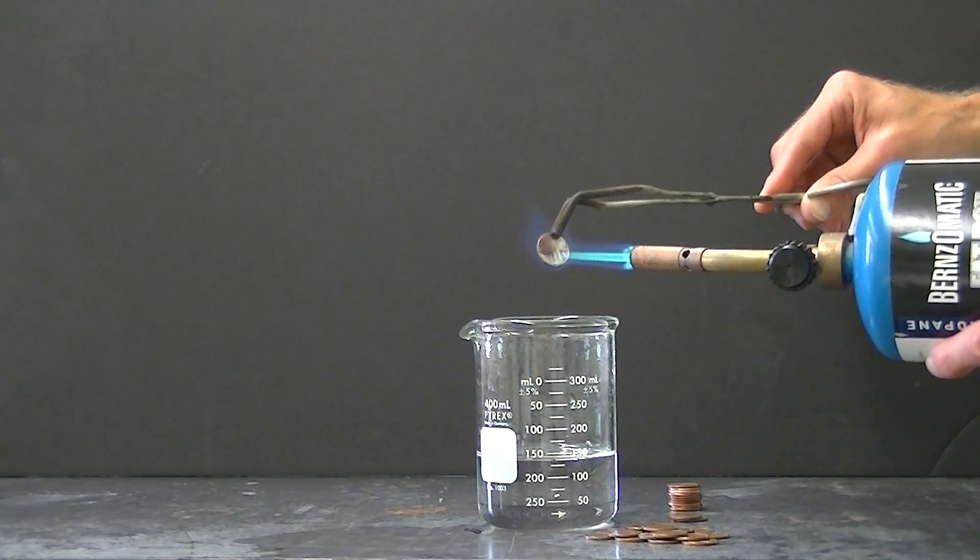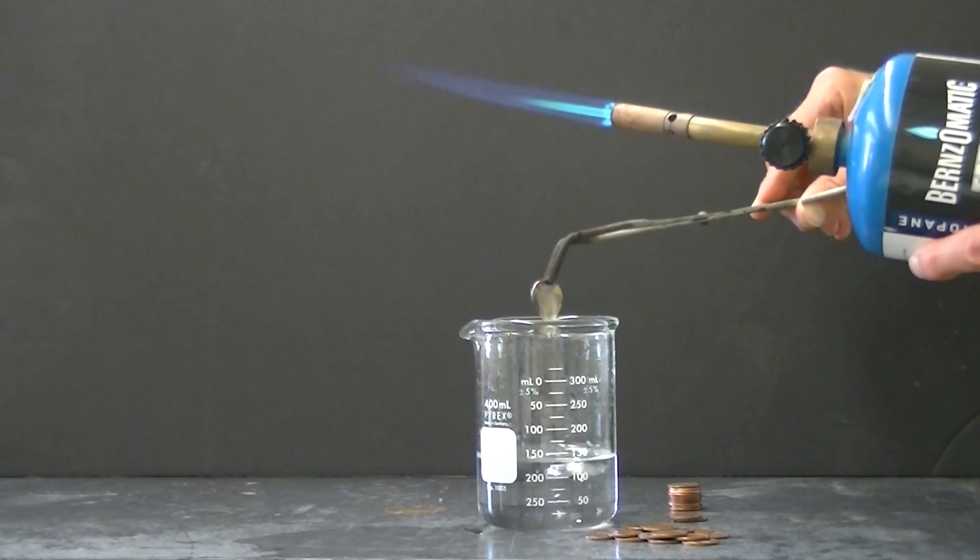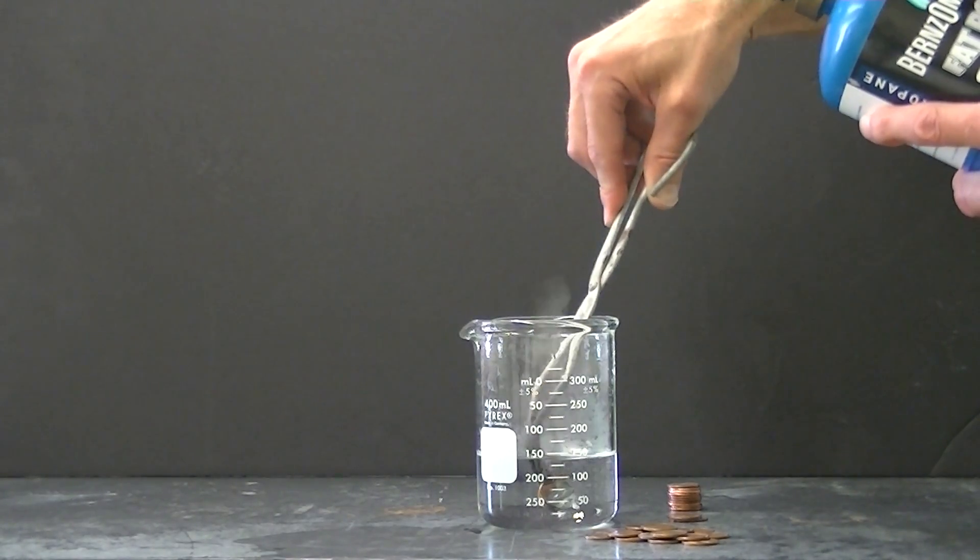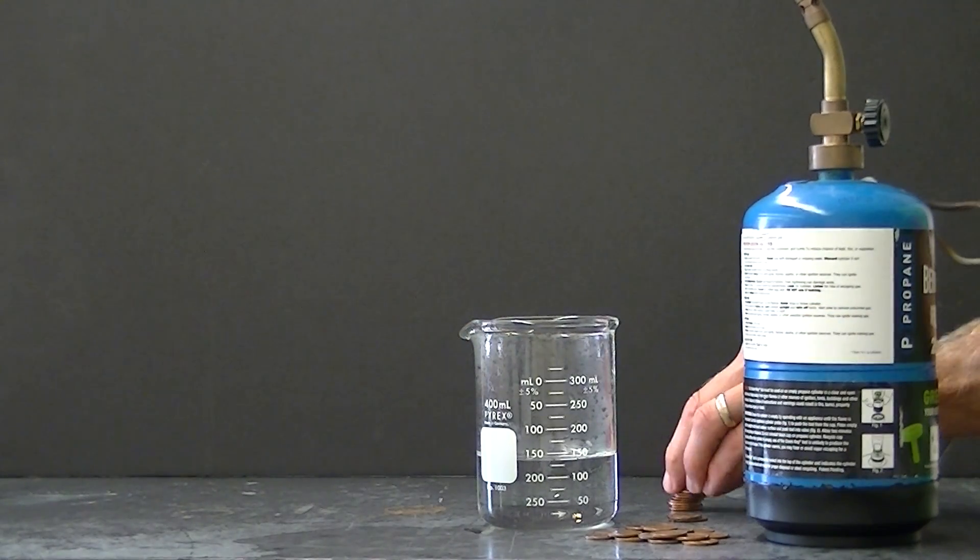Now zinc melts at 419 Celsius and it's pretty easy to heat this penny to 419 Celsius. You can see that because the zinc melts out of the penny. I'll do a few more of them.